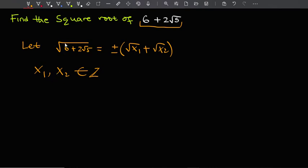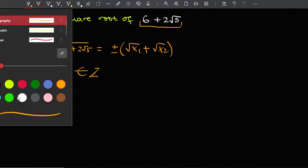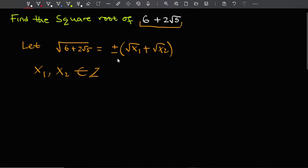From here, let's try to square both sides and see what we get. Let me change the color so that you can easily follow this up. So if I square both sides, I'll have 6 plus 2 root 5 equals—if I square here I'll have only the positive—so that's going to be x1 plus x2 plus 2 times the square root of x1 and the square root of x2.